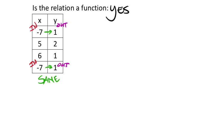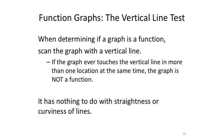The other part of our objective is determining if a graph is a function. We've seen ordered pairs and tables — now we look at graphs. To determine if a graph is a function, we use what we call the vertical line test.